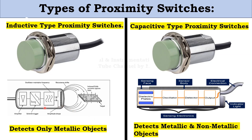Let's understand the working principle of the Inductive Proximity Switch. Once power supply is received, an oscillator gives signal to a coil inside the switch. This coil produces an electromagnetic field around it. When any metal comes near the coil, the current flowing in the coil changes. This change is detected by the sensor, which gives output to the PLC indicating that a metal is detected.